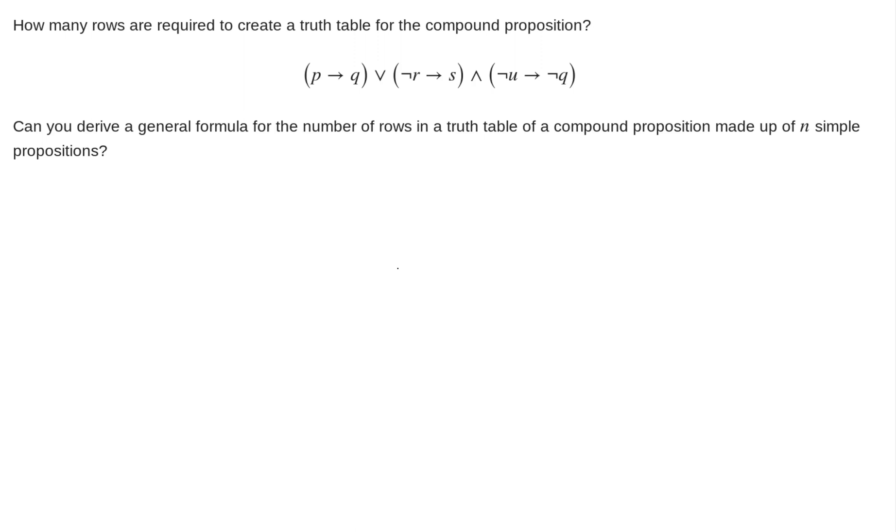In this example, we're asked to determine how many rows are required to create a truth table for this compound proposition. It's P implies Q, or not R implies S, and not U implies not Q.